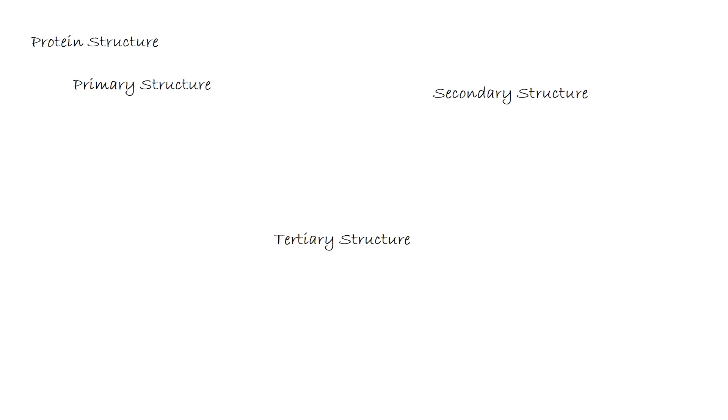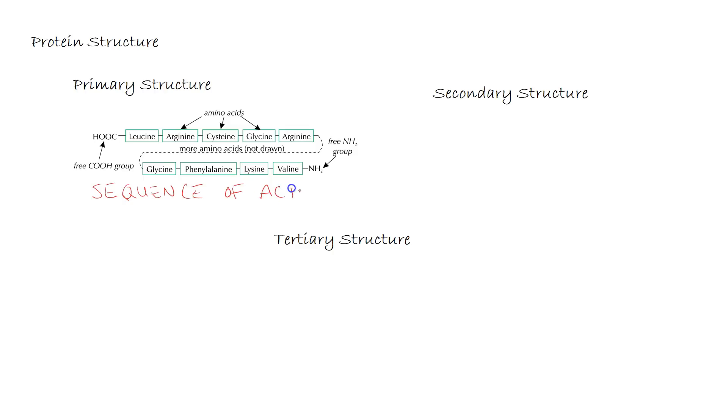We're now going to have a look at protein structure and there's three key elements to the protein structure that we need to look at: the primary, the secondary and the tertiary. The primary structure is simply the sequence of amino acids. Here we've got a picture, we've got leucine, arginine, cysteine, glycine, arginine. Each of these little green squares or rectangles is representing an amino acid and they have polymerized together to form a polypeptide and we have at the end of that the free carboxylic acid group and the free NH2 group. The order in which they come in can be determined by numerous factors and all we need to worry about is the primary structure is that sequence of those acids.